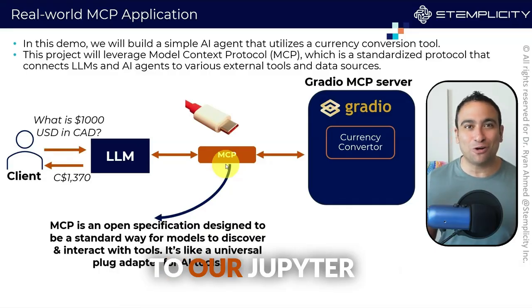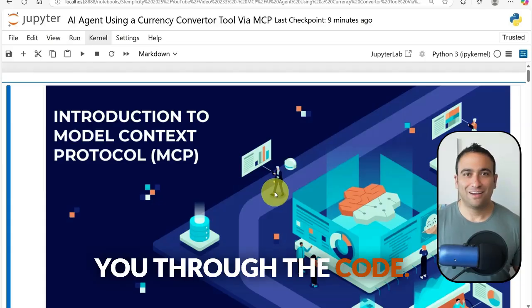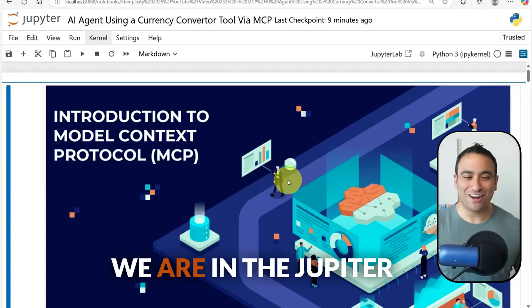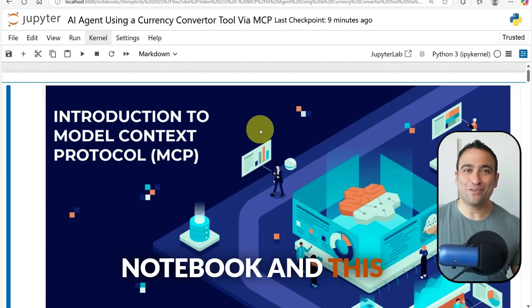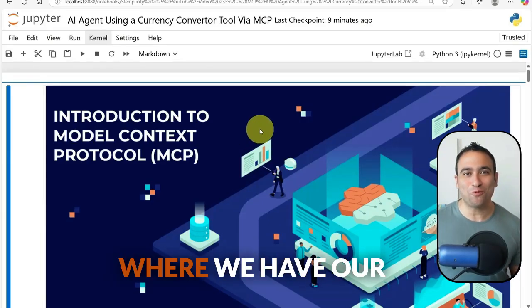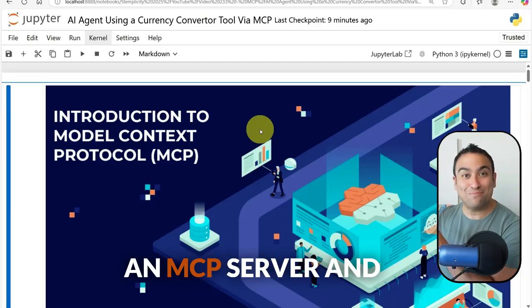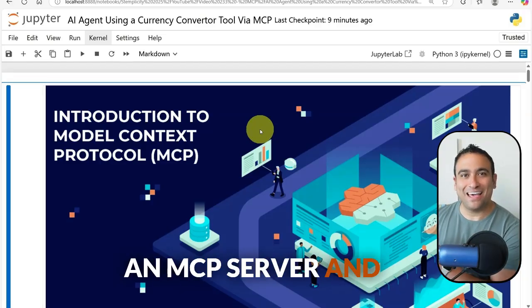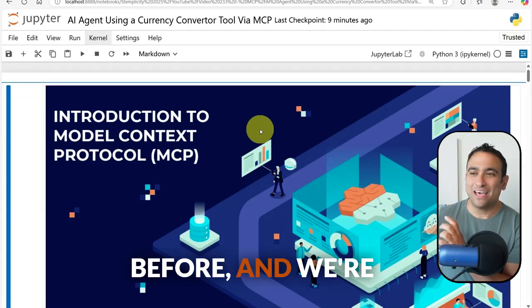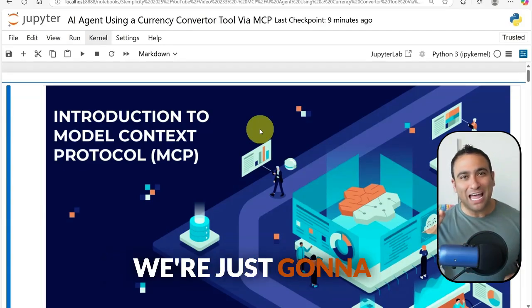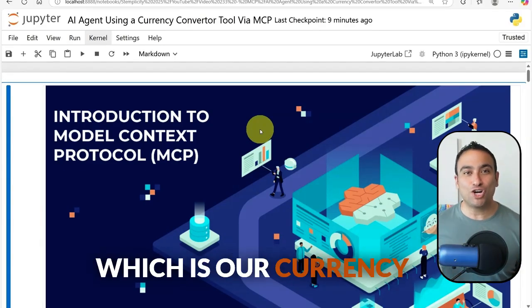Let's shift to our Jupyter notebook and walk through the code. We are in the Jupyter notebook for a simple demo where our AI agent talks to an MCP server. We're going to be using Gradio, and to keep it simple, we'll have one single tool: our currency converter.